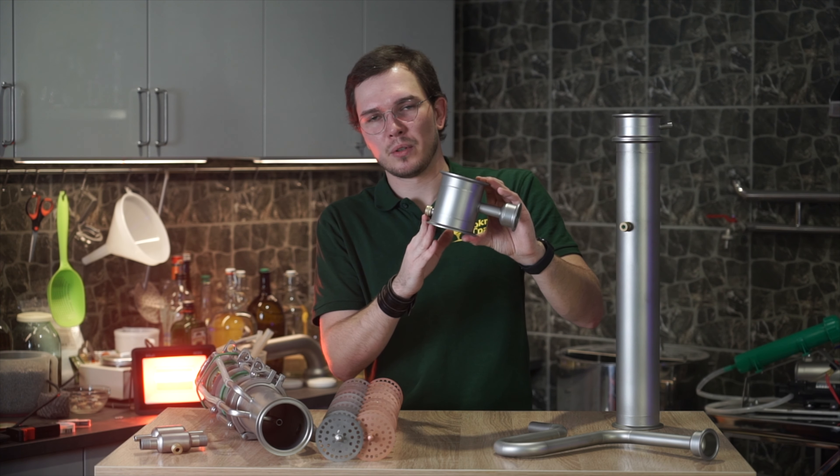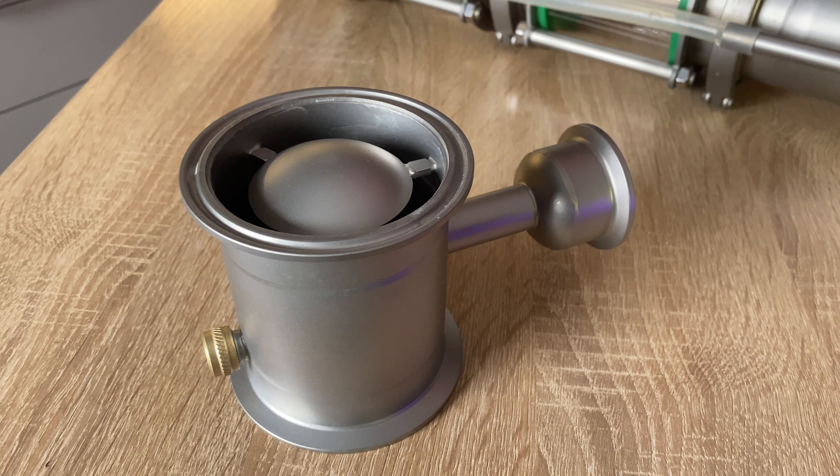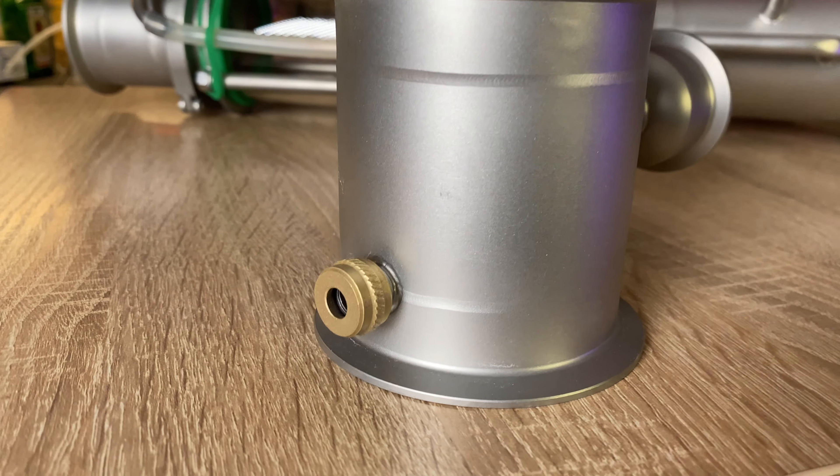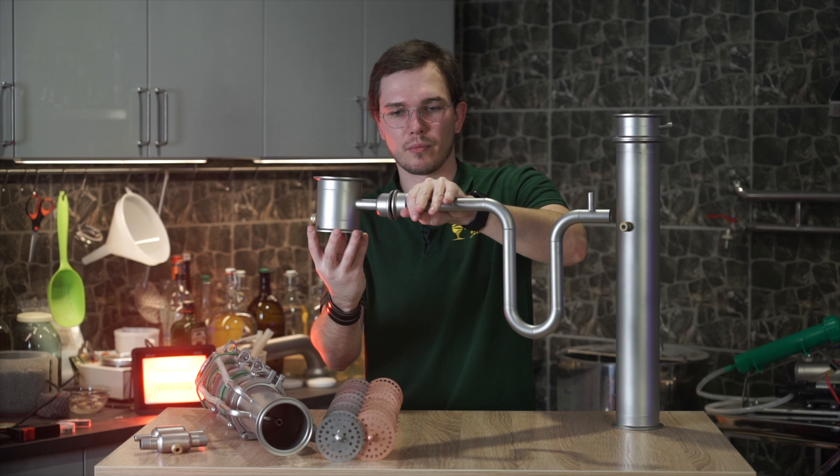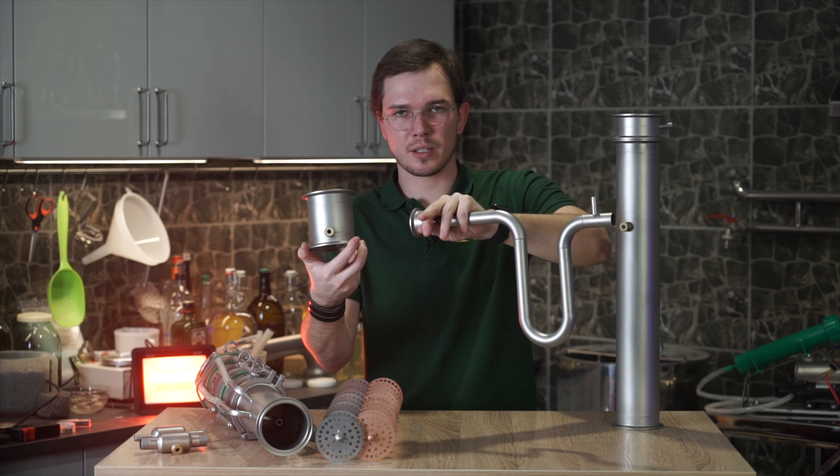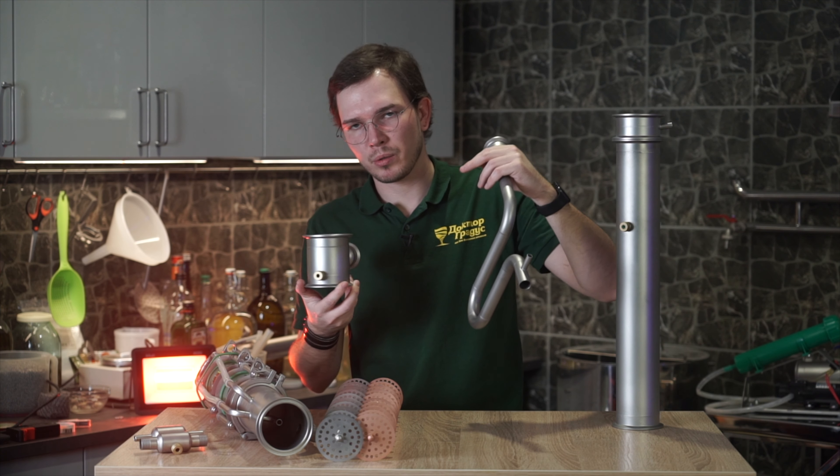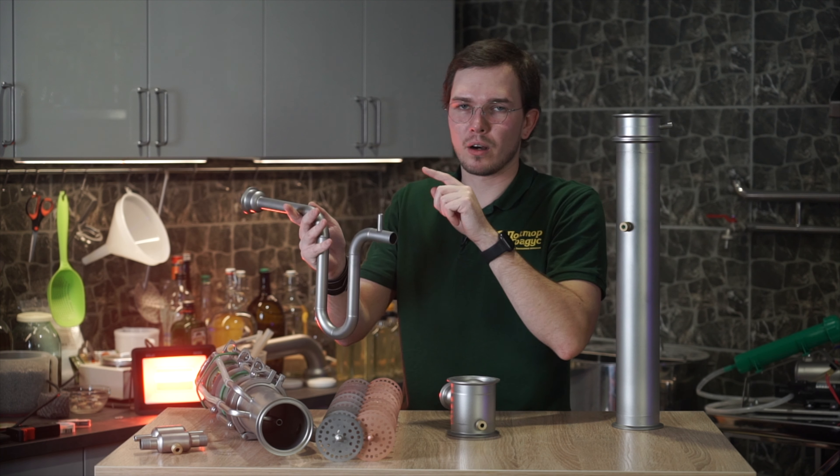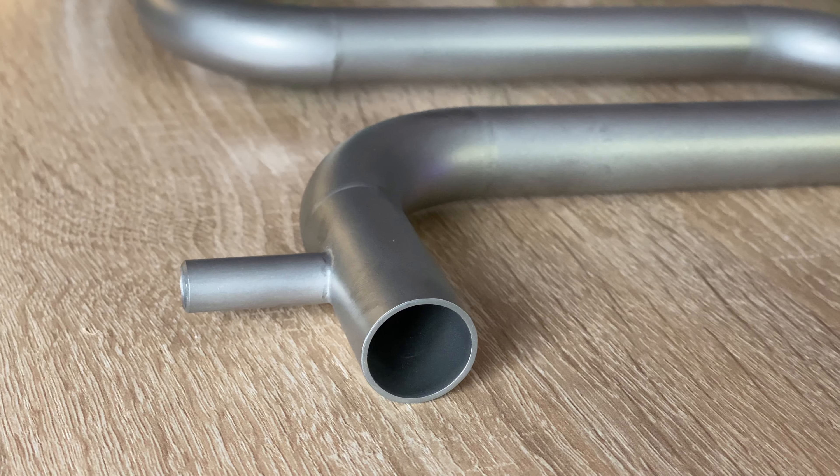And the unit which I already showed in this video episode. This is a siphon unit for collecting spent mash. So U-band. It comes like this. It has a universal thermometer port where you can install automatic digital thermometer or anything. On the end, we have installed 10 millimeter tube.